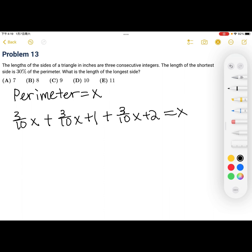Combining all the three tenths together, we get nine tenths x plus three equals x, three equals one tenth x, x is equal to 30.